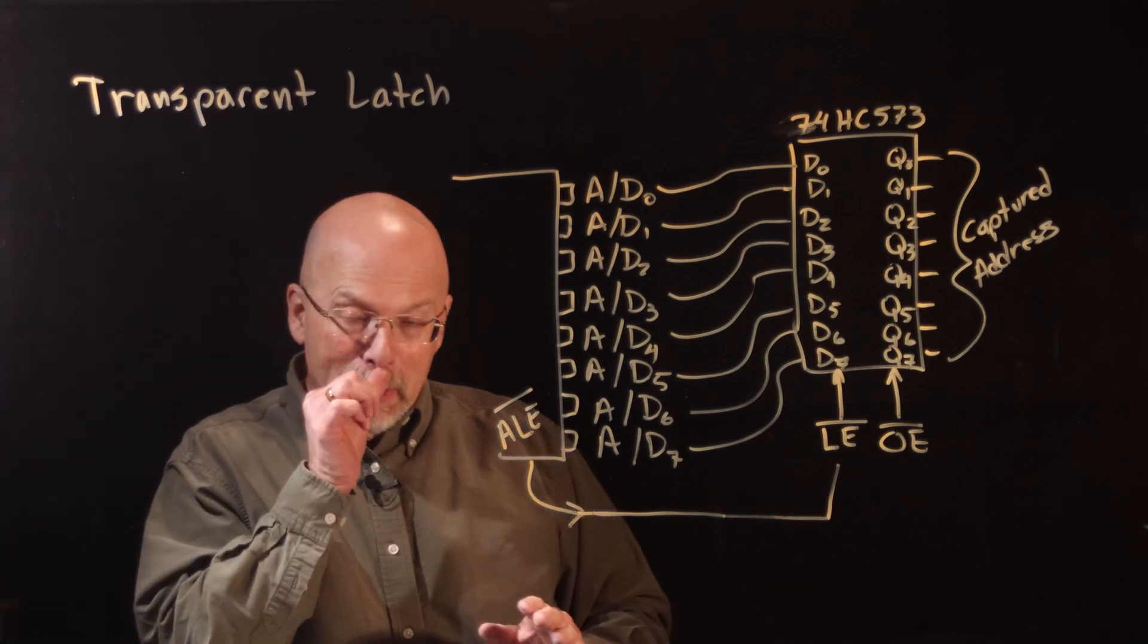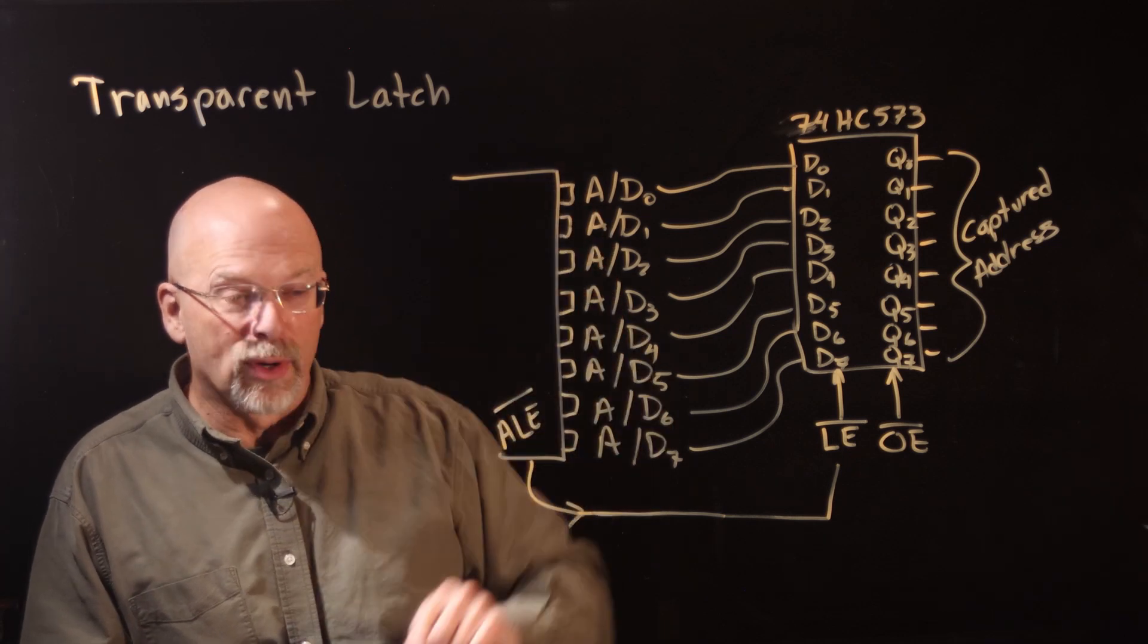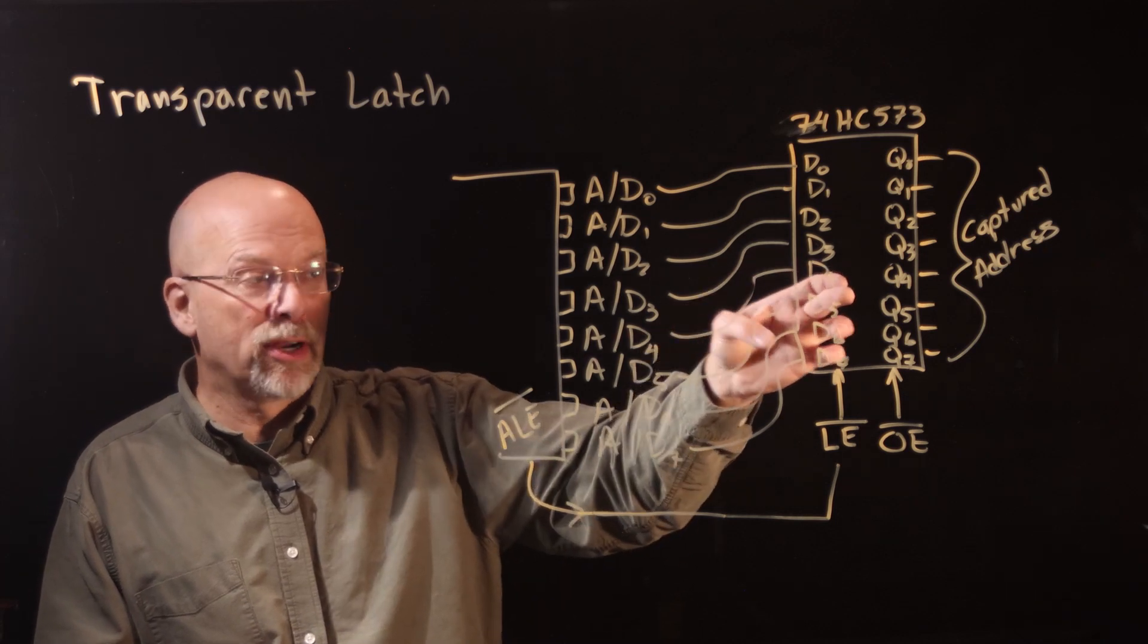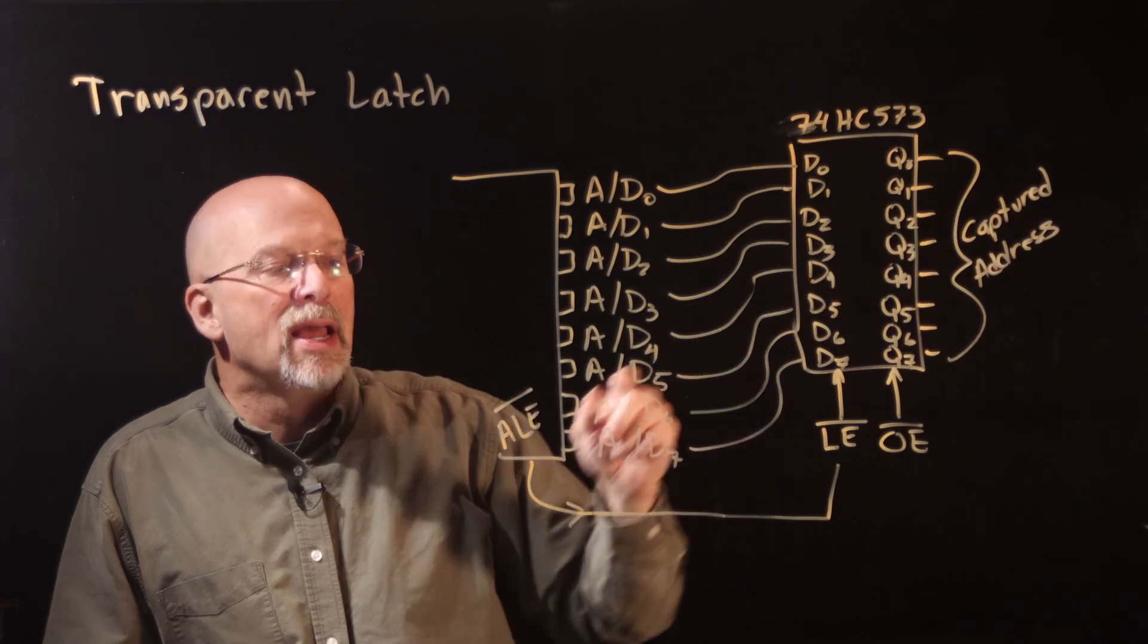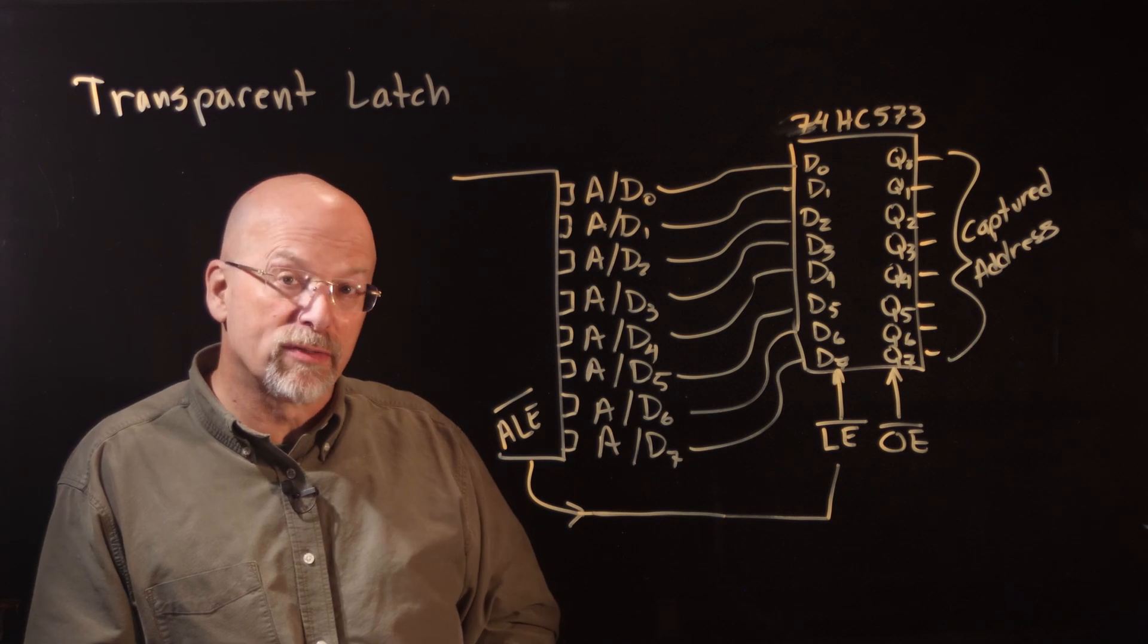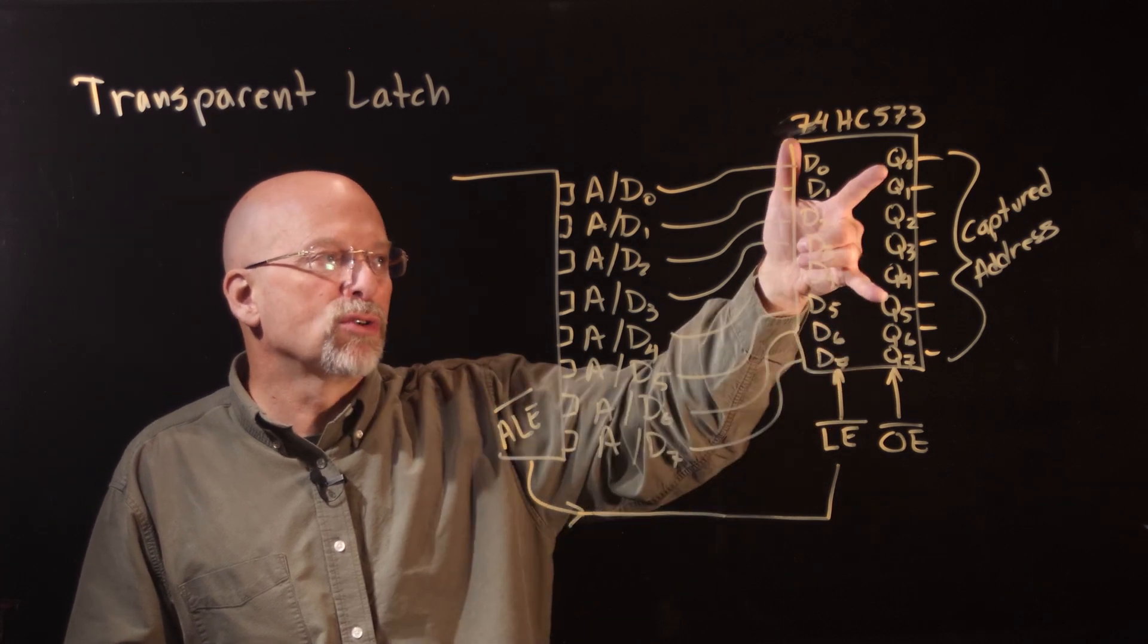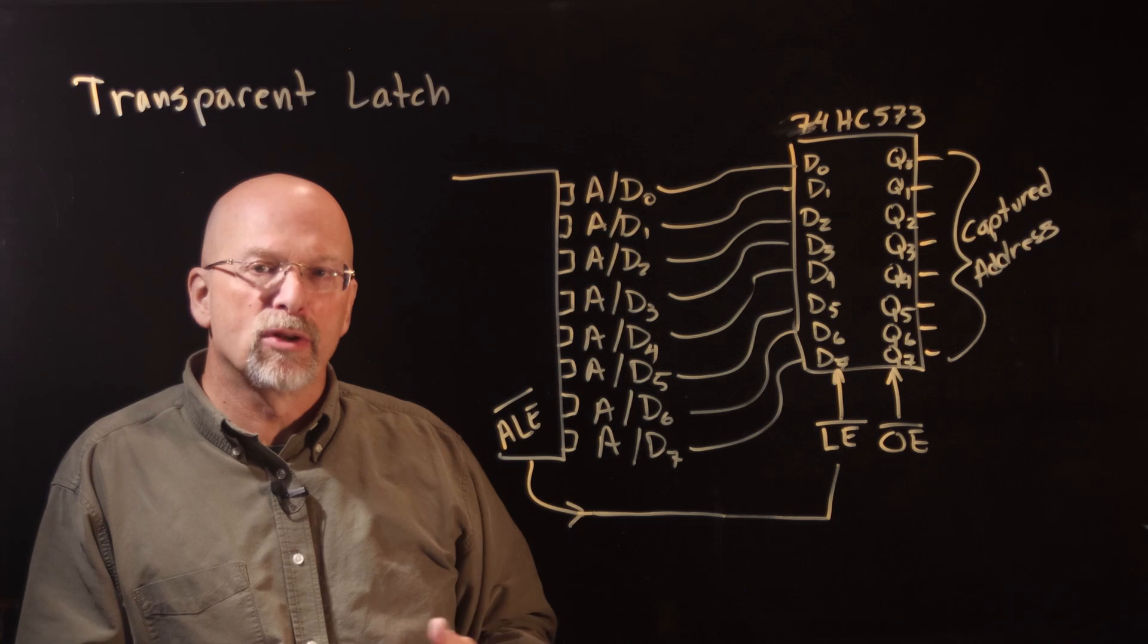Now what you did was, the processor put the correct address on these address lines, it pulled ALE low. This transparent latch said, 'okay, I'm going to pass that address straight through.' As soon as the processor—just before the processor decided to switch the function of these pins over to data—it would pull ALE high. That would latch those values on those outputs, and now the data lines could be used for data without losing the value of the address that we had on there just moments ago.